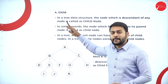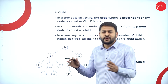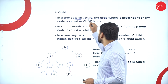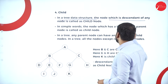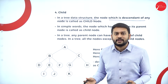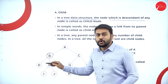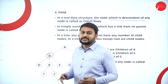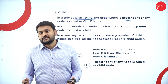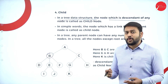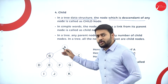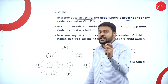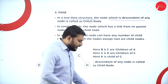Moving forward to child node — it is very simple. In a tree data structure, the node which is a descendant of any node is called a child node. When this node has got a parent node, I will call it a child node. It's the reverse concept of parent node: a node with a parent is a child node.